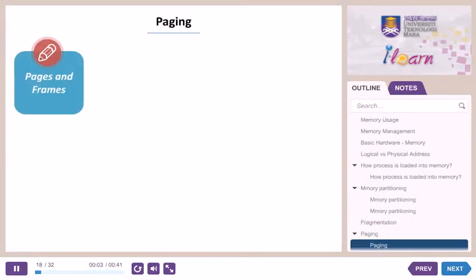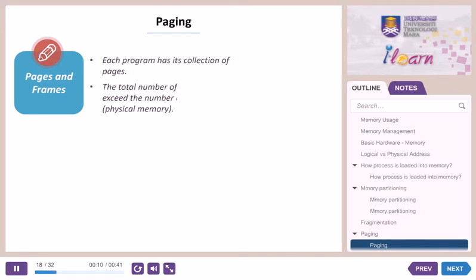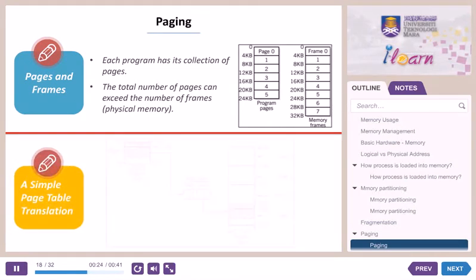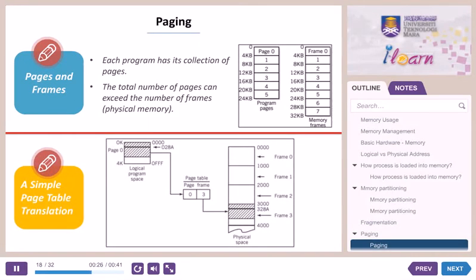In the diagram, each program has its collection of pages, and all pages will be loaded into memory as frames. The total number of pages can exceed the number of frames. The diagram shows a simple page table translation whereby pages from the logical space are placed into the page table, and in the page table all pages are mapped with the frame number in physical memory. For example, page 0 in the page table is mapped to frame number 3, meaning that page 0 is located at frame 3 in the physical memory space.